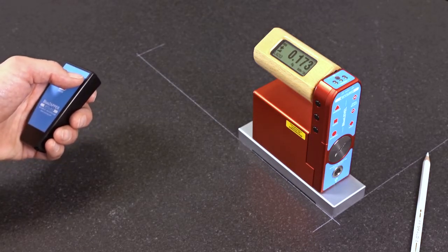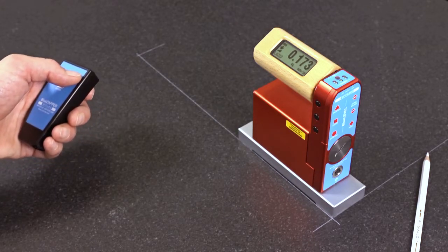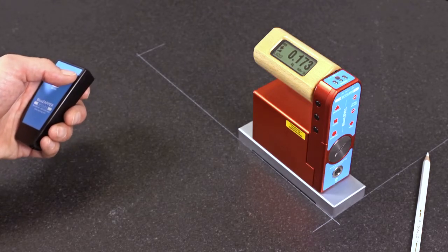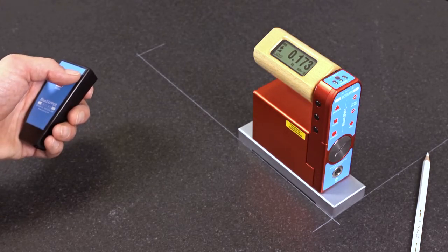My reversal measurement is now terminated and I can see that I have to correct the setting plate by 173 micrometers per meter.